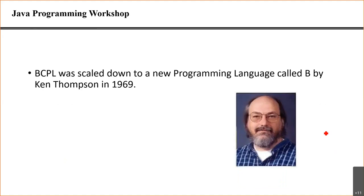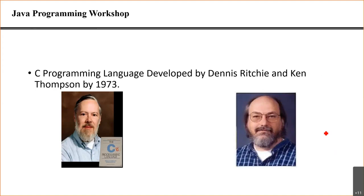Ken Thompson and Dennis Ritchie then developed a new programming language called C. They took B and modified it because B was not good enough for the project they were doing — creating a new operating system. That operating system was a multi-user, multi-application operating system named Unix.